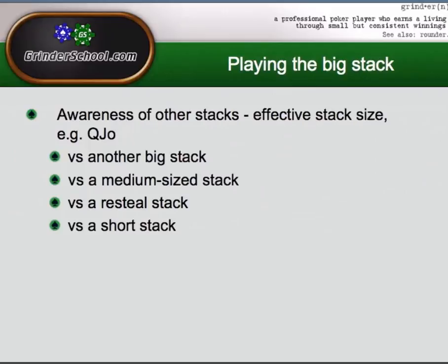Let's move on to playing the big stack, talking about awareness of other stacks and effective stack size. When we talk about effective stack size, it's the stack size of the shortest player in the hand — whoever has the fewest chips. So if you're playing against one opponent and you have 80 big blinds and they have 12 big blinds, the effective stack is 12 big blinds. You can only win 12 big blinds; they can only win 12 big blinds — they can't win your 80 big blinds because they haven't got that many chips to put up.